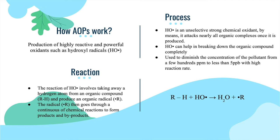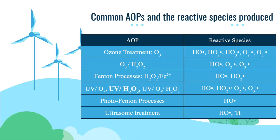With these characteristics, hydroxyl radicals can help in breaking down organic compounds completely, and it is used to diminish the concentration of pollutants from a few hundredths ppm to less than 5 ppb with high reaction rate. The reaction of hydroxyl radicals involves taking away a hydrogen atom from an organic compound to produce an organic radical, as shown in the equation in the slide. AOPs normally utilize high-energy oxidants such as ozone, Fenton's reagents, and hydrogen peroxide to generate high concentrations of highly reactive hydroxyl radicals.